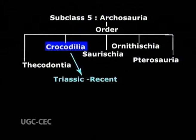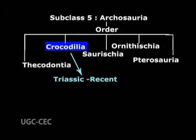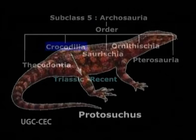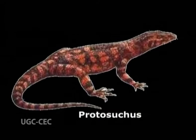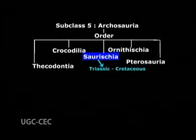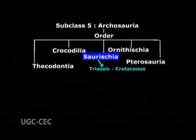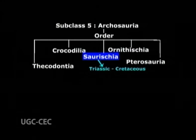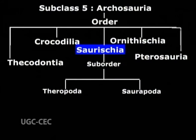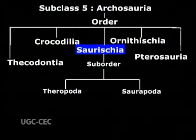Order 2, Crocodilia, exist since Triassic to recent times; only Protosuchus is extinct. Order 3, Saurischia, lived during Triassic to Cretaceous and possesses two suborders: Theropoda and Sauropoda.